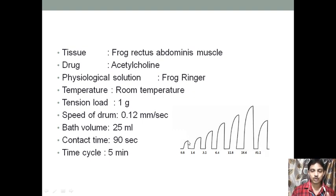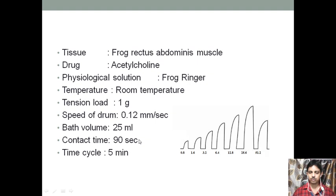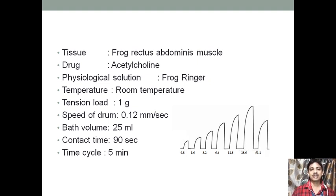After 90 seconds, you need to switch off the drum. The inter-cycle time — from the end of one cycle to the start of the next — includes a wash period of 1 to 3 minutes, because every time you need to wash off the earlier drug before giving the new concentration. All those things we need to follow before we go to the experiment. Next, we are going to see how we perform the experiment and how we get the results.